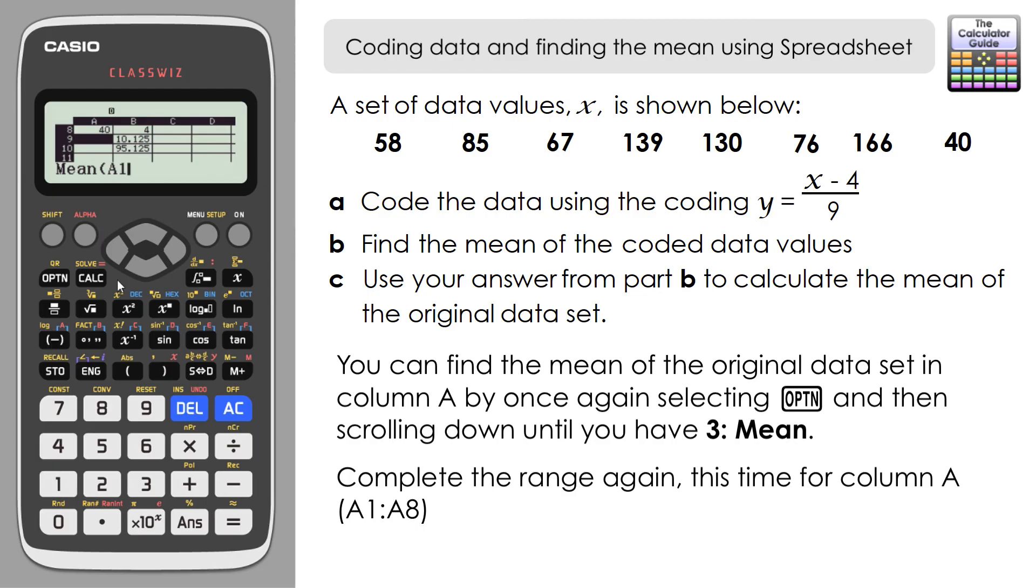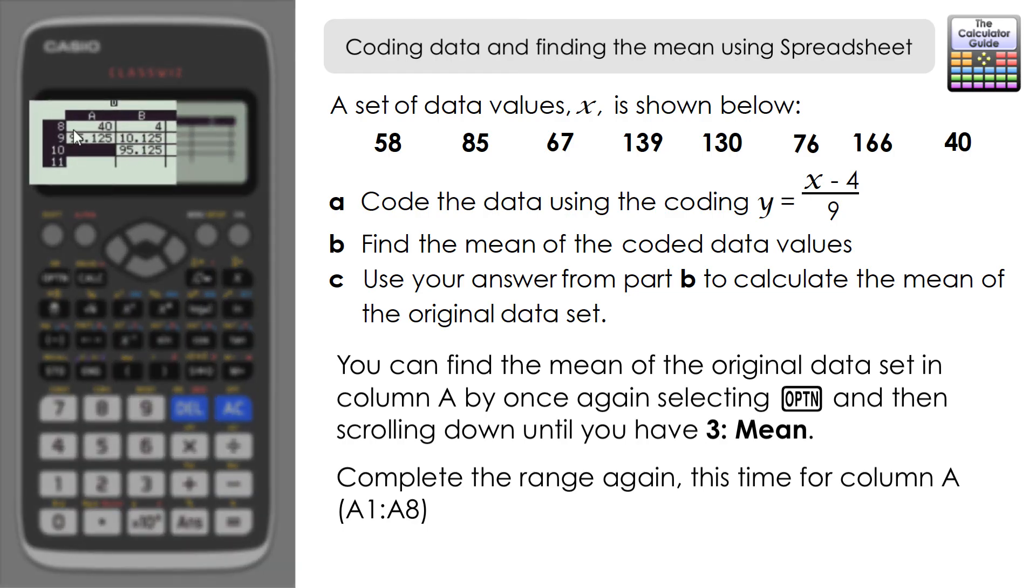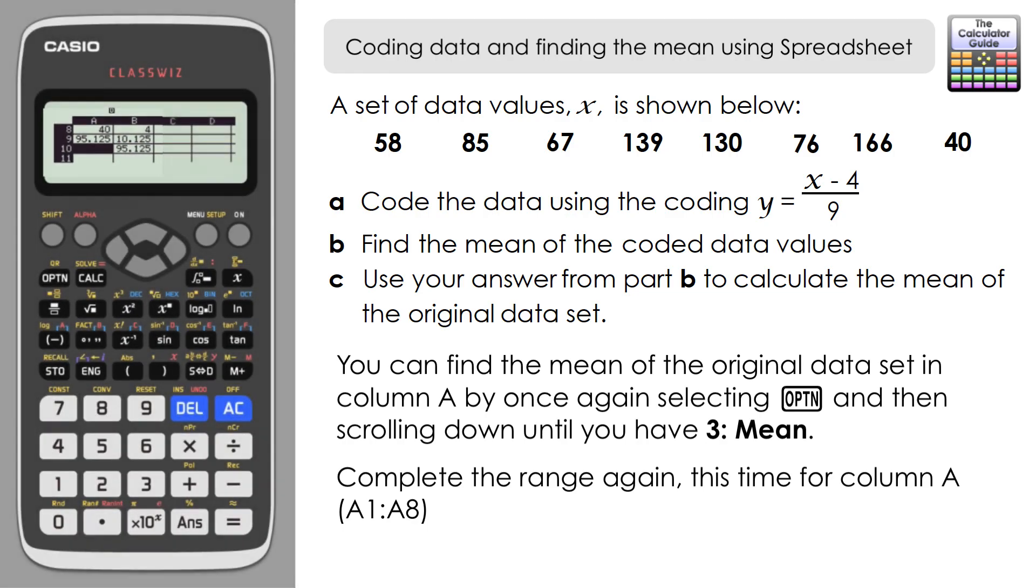Then we put the range of values we want to express the mean for. That's A1 colon A8, so those eight values. Close brackets, press equals, and here we have the mean again: 95.125. So we can see that they match. It's a quick check that we used the correct method to take the mean of our coded data and find the mean of our original data, because it matches what the calculator worked out using the mean function.